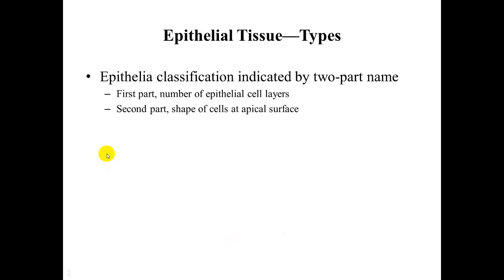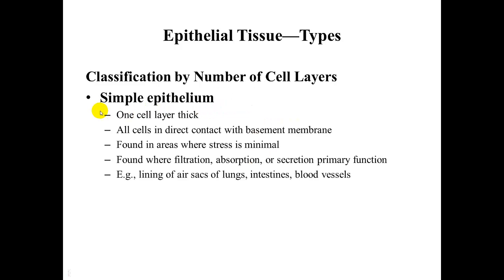Epithelial tissue is classified by a two-part name. The first part tells you the number of cell layers in that tissue, and the second part tells you the shape of the cells at the apical surface. When looking at cells with multiple layers, you must look at the apical surface cells to determine their shape. Simple epithelial — simple indicating one cell layer thick — means all cells are in direct contact with the basement membrane.